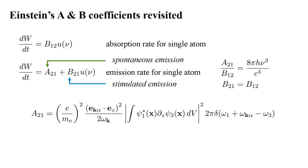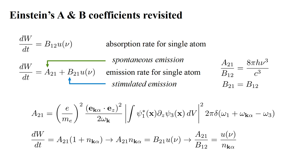Using the 1s and 2Pz orbitals as our two atomic energy levels, we set A-two-one to be the transition rate for spontaneous emission. The total emission rate is then A-two-one times one plus N-k-alpha. Comparing this to Einstein's emission rate formula, we see that A-two-one times N-k-alpha must equal B-two-one times U of nu. Therefore the ratio of A-two-one over B-one-two must equal U of nu over N-k-alpha.